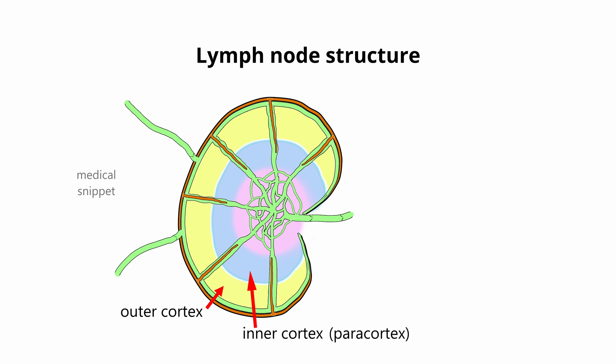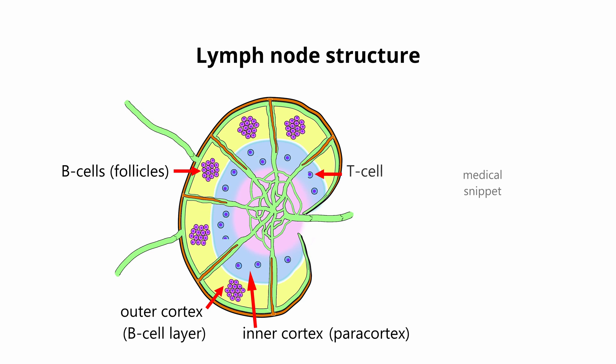Outer cortex consists of B lymphocytes. These are arranged in follicles, so outer cortex is also called B cell layer. The paracortex consists mainly of T lymphocytes, so inner cortex or the paracortex is also called T cell layer.